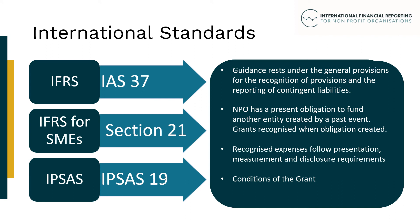Under these standards, an expense or a liability would be recognised when an NPO has a present obligation to fund another entity created by a past event. Recognition of a grant would take place when an NPO has no realistic alternative other than to settle an obligation to pay the grant, and it is therefore probable that there will be an outflow of resources. A commitment or constructive obligation would create a liability if it relates to a past event and the amount of the grant can be reliably measured. When an expense is recognised, it follows the relevant standards' requirements for presentation, measurement and disclosure, with cross-reference to the nature or function of expenses.